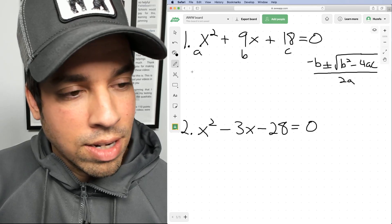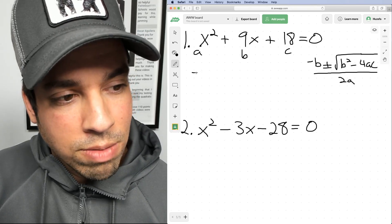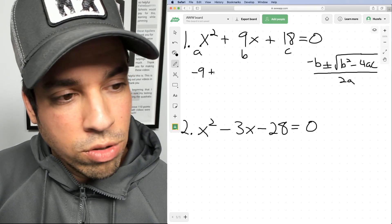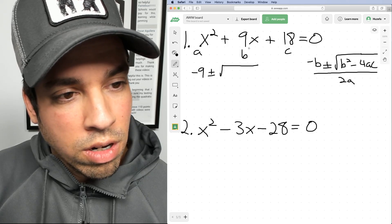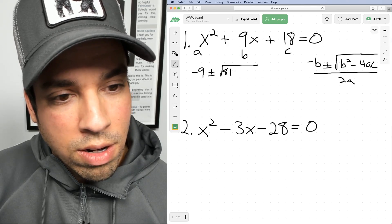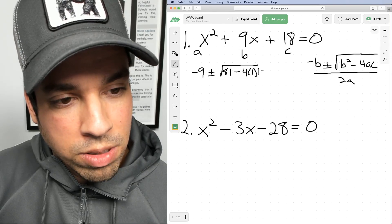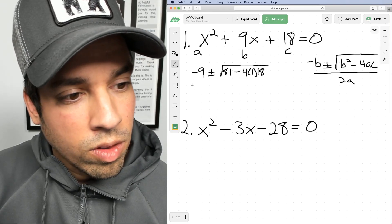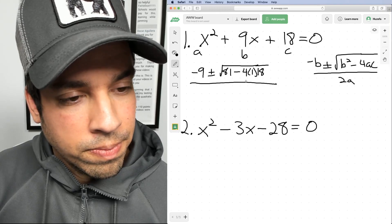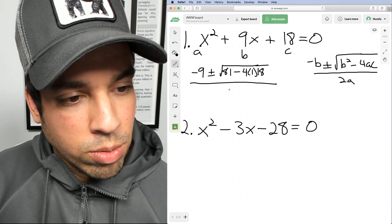So my B is nine, so they said negative B, so first it's gonna be negative nine, plus or minus the square root of B squared, which is 81, minus 4 times A, which is one, times C, which happens to be 18, over 2A, two times one, which is two.